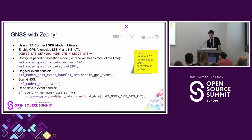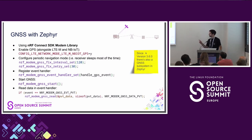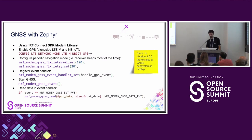Next we want to get the position of the device using some kind of GNSS — GPS in this case. There are actually just a few lines of code needed to acquire a GPS position with the modem library. The most important aspect is configuring periodic navigation mode, because we don't want our GPS receiver to be active all the time — it would drain the battery way too fast. So we want it to sleep most of the time and wake up in periodic intervals to get a fix.